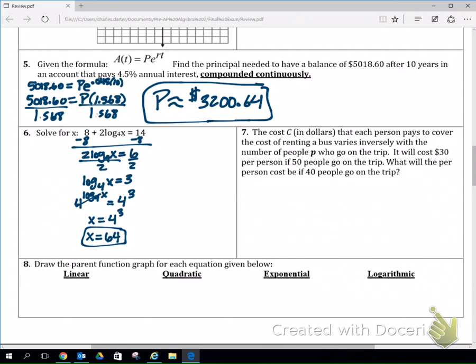So solving logs, get the log piece by itself, and then we need to change it over with exponents to cancel out my log, and then that just solves for x for me. Number seven, y'all can read, I'm not going to read it out loud. Varies inversely is key here. So it varies inversely, it cost me 30 bucks for 50 people, how much are we going to pay per person if only 40 people go?